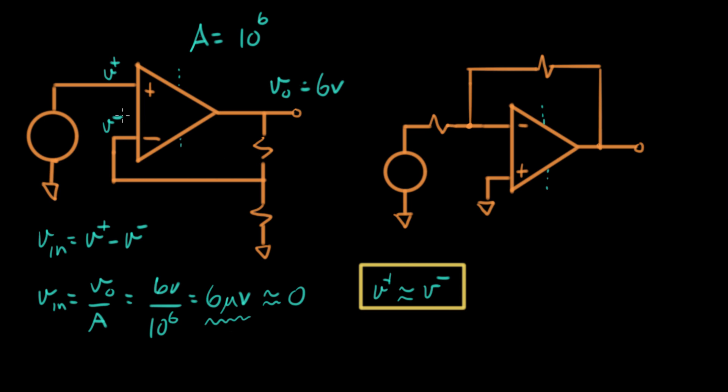So in this circuit, when it's working right, these two voltages are pretty much the same. So let's take this idea of Vplus pretty much equals Vminus and apply it to this circuit over here. Now this is our inverting configuration for an op amp. So this is Vplus and this is Vminus in this circuit.